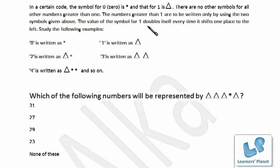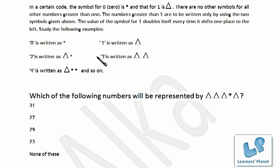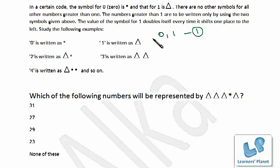The examples given: 0 is written as star, 1 as delta, 2 as delta-star, 3 as delta-delta, 4 as delta-star-star, and so on. If you have studied binary number system carefully, you should recognise this. It's clearly given that only two digits — 0 and 1 — are used to represent numbers. That means it should be binary, because only in binary do we use two digits to represent the entire set of numbers.